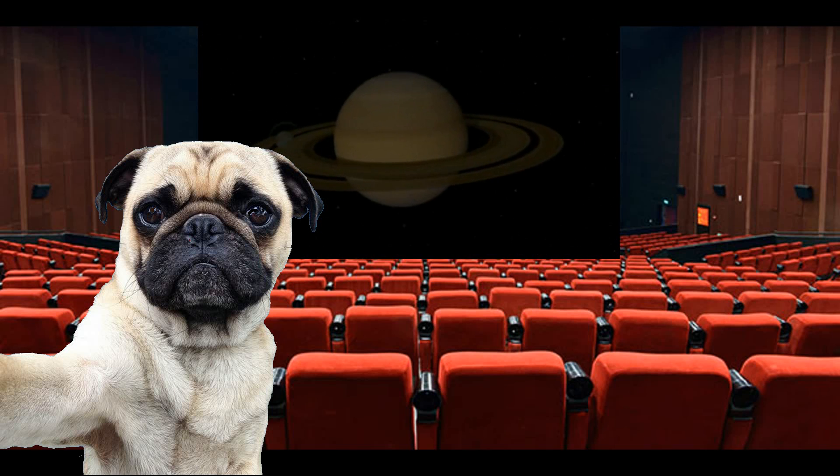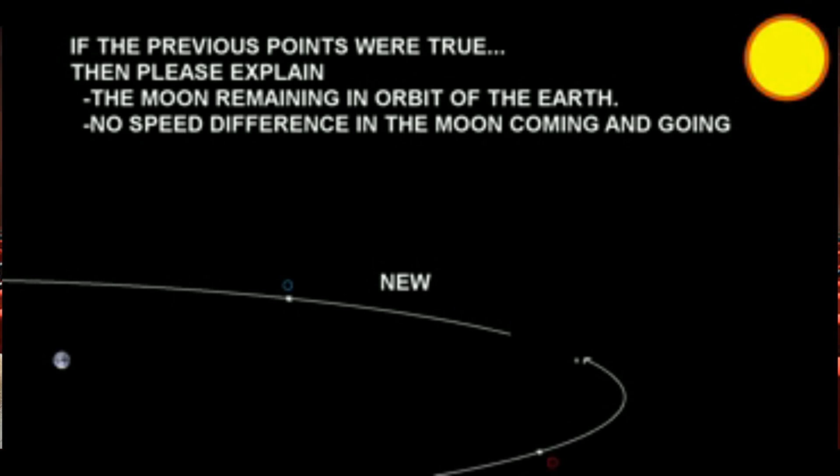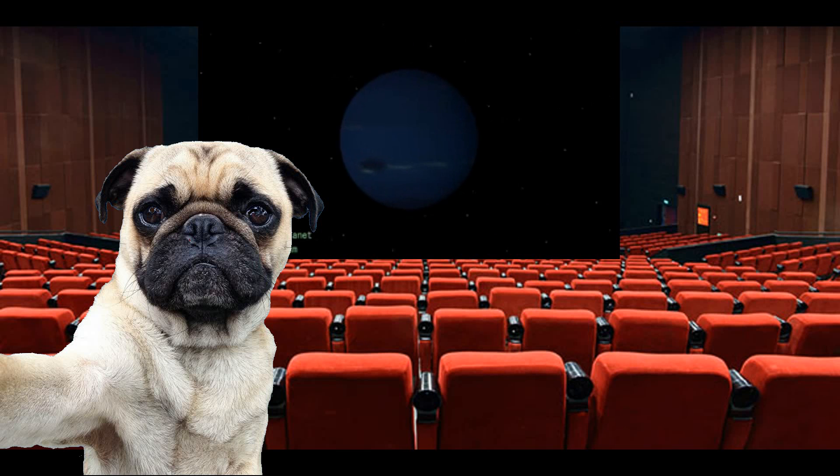Also on that same note, think about it: when the Moon is coming around, say getting close to a new moon as it's entering its orbit, you can take a look at that pink square down there. Wouldn't the Sun be pulling it and therefore the Moon be moving faster than when it is coming out of new moon, as you can see by the blue square? Wouldn't that make it slower?